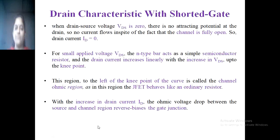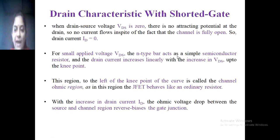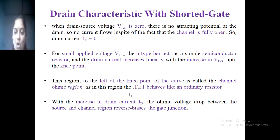When drain-source voltage VDS is zero, there is no attracting potential at the drain, so no current flows — drain current ID equals zero. For small applied voltage VDS, the N-type bar acts as a simple semiconductor resistor and the drain current increases linearly with the increase in VDS up to the knee point. The region to the left of the knee point is called the ohmic region, as in this region the JFET behaves like an ordinary resistor.